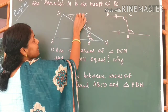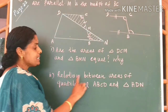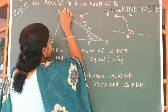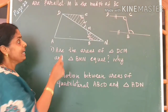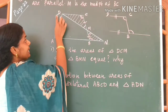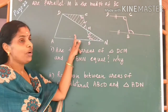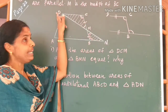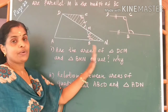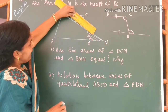Now let me shade this portion. Area of triangle DCM is equal to area of triangle DMN. Now come to the second question: what is the relation between the areas of quadrilateral ABCD and triangle ADN? From the figure, it is very much clear that the area of ABCD is equal to the area of triangle ADN. More about this you will learn in 9th standard. We have proved area of ABCD equals area of triangle ADN. By looking at the shaded part you can understand it very clearly — I have just taken this triangle and placed it here.